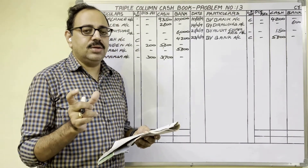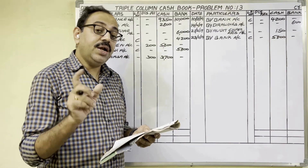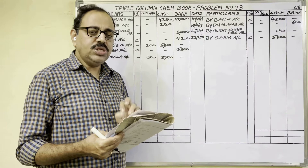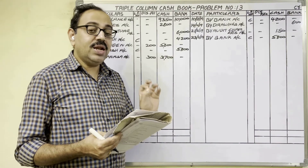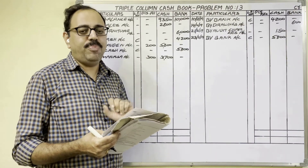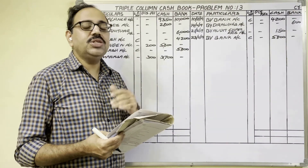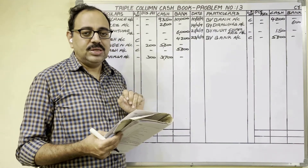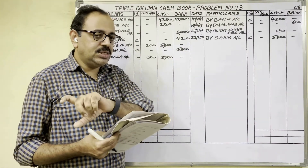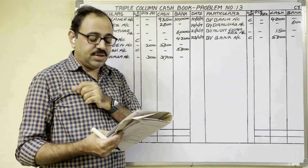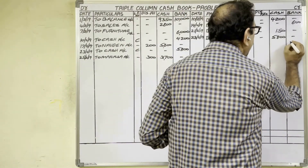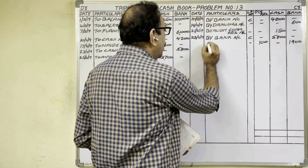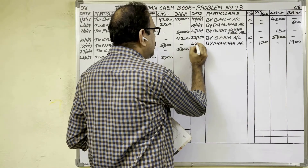27th date: Paid to Maunika through check 1,900 rupees in full settlement of 2,000 rupees. Whenever 'in full settlement' is given, it means a discount is involved. The firm owes Maunika 2,000 rupees but pays only 1,900 by check — so the firm receives a discount of 100 rupees from Maunika. Maunika presents the check at our bank, so our bank balance decreases — credit side bank column: 1,900 rupees. Discount received: 100 rupees. Write 'By Maunika Account' on 27th date.